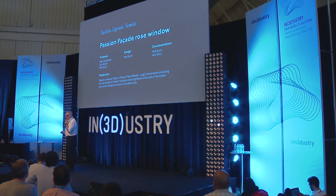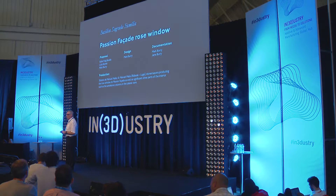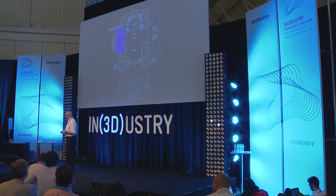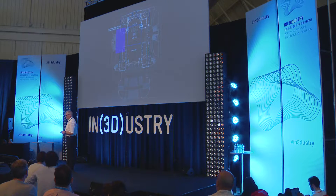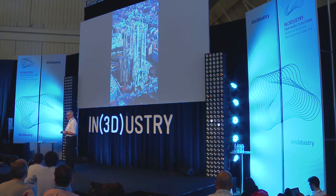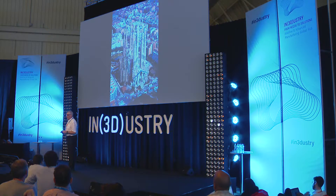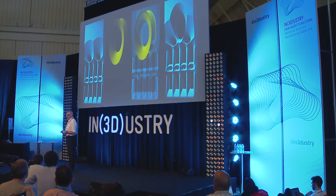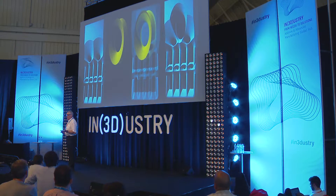Looking at two projects — this is the rose window on the passion facade, on the west-facing part of the building. If you're looking at it from the city side, that's what you're looking at. You can see the two groups of towers and the space in between — that is where the window was designed to go. The process using computation is very similar.